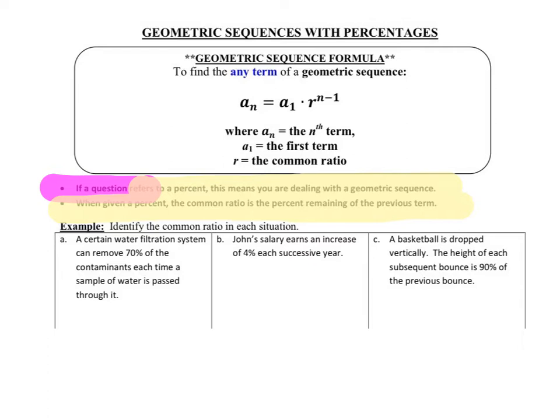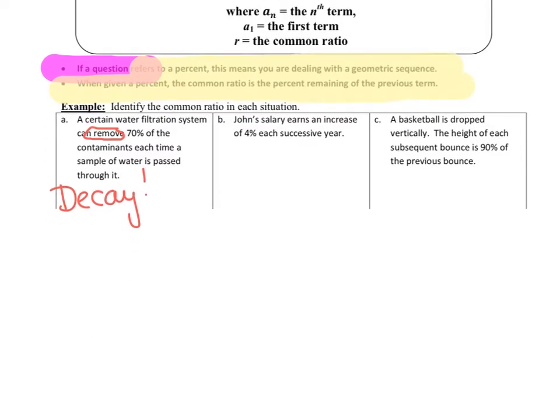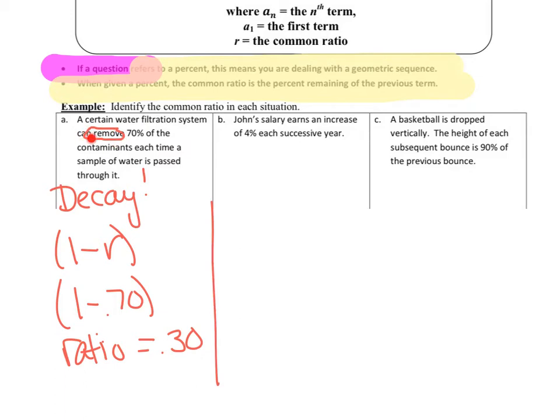Let's look at example A. A certain water filtration system can remove 70% of the contaminants each time a sample of water is passed through it. Notice the word removed. Highlight that for yourself. That is a big indication that this is decay. Something's being removed. So how am I going to start my formula? I know it's going to be 1 minus the rate. So I'm going to say it's 1 minus 0.70. So my ratio that I'm going to use is 0.30. Remove means it's decay. We just talked about growth and decay. It's the amount times the initial amount times 1 minus the rate to the T. So to figure out this ratio, I have to do 1 minus the rate. So 1 minus 0.70 equals 0.30.